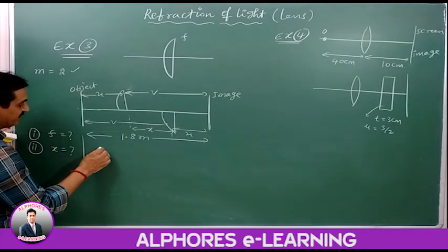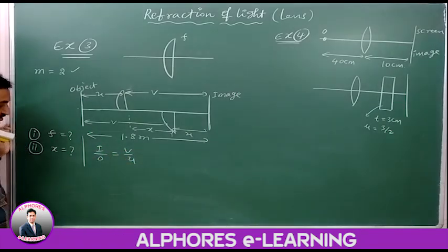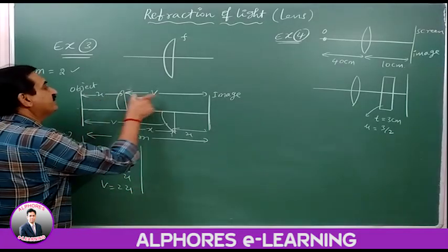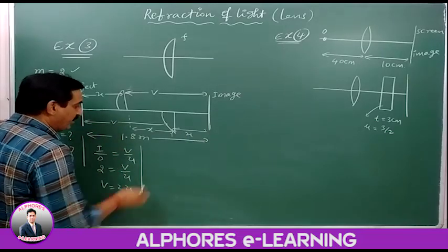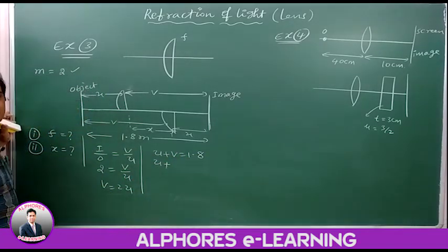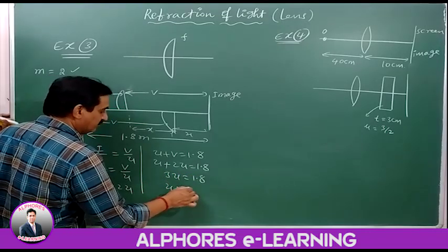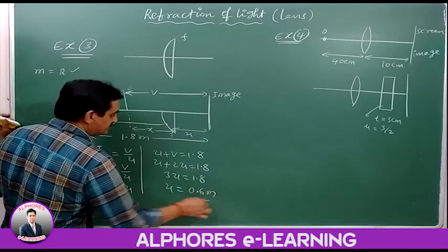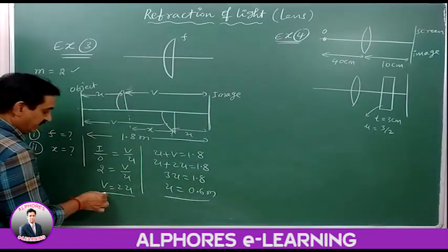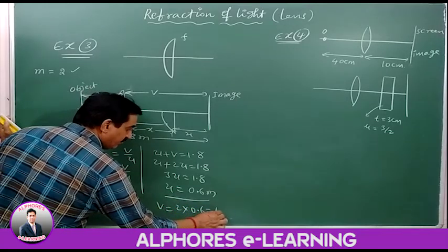Using the formula: magnification = image size / object size = V/U. Since magnification is 2, V = 2U. We also know U + V = 1.8 meters as given in the problem. Substituting: U + 2U = 1.8, so 3U = 1.8, giving U = 0.6 meters as the object distance.